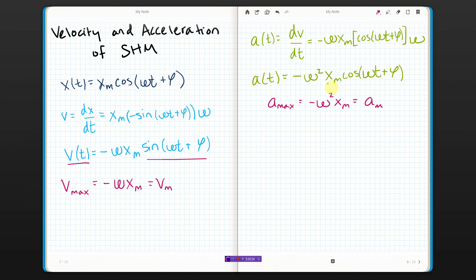Also, something interesting. Sorry about that. I just hit my microphone with my hand. Something else that's interesting. If you look carefully, this part right here looks an awful lot like this. In fact, they're the same thing. Xm cosine omega t plus phi. Xm cosine omega t plus phi. So you could say that the acceleration as a function of time is equal to negative omega squared times the function x of t like that. You could do that if you want to.